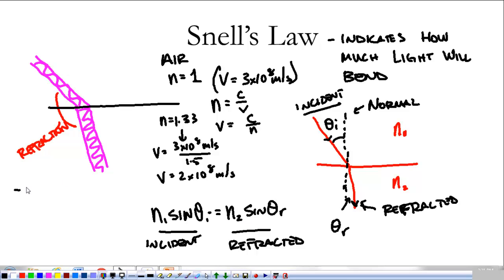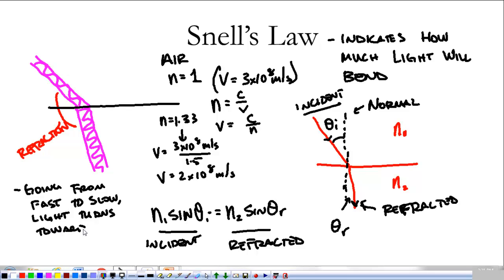There are some trends to notice. Going from fast to slow, light turns toward the normal. Going from slow to fast, it bends in the exact opposite direction — away from the normal, like a car turning into a puddle. As a light ray goes from a fast medium to a slow medium, the angle actually gets smaller if N2 is greater than N1, which means the speed in N2 is less than in N1. Right after this, we'll look at how Snell's Law actually works with a simulation.